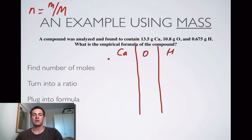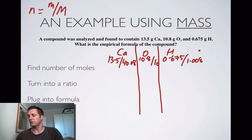So the number of moles of calcium is going to be 13.5 divided by calcium's atomic mass 40.08. We're going to have 10.8 over 16 for oxygen and we're going to have 0.675 over 1.008 for hydrogen. So I've got all those numbers from my periodic table. Let's just find out what they are. 13.5 divided by 40.08 is 0.337.